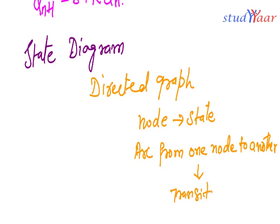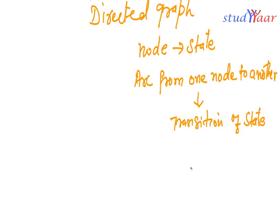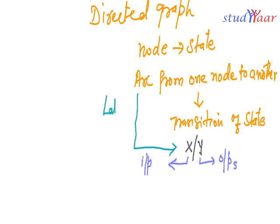Transition of state. This arc is labeled with your inputs and your outputs. Your x is your inputs and y is your outputs. Your arc is labeled with x slash y.